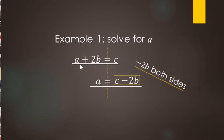Our left-hand side was A plus 2B minus 2B — no 2Bs left, just A equals. And this is what it means to solve for a variable: it basically means get the variable by itself.